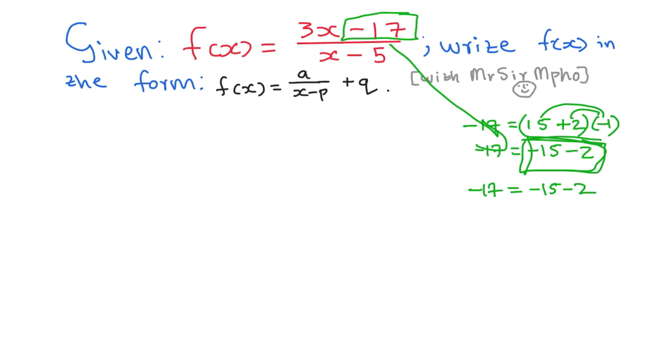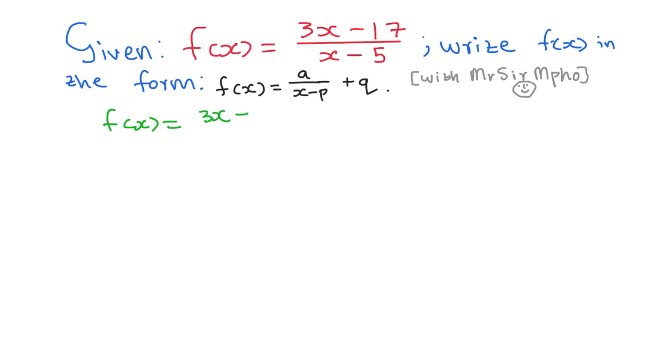So now, we're going to go back straight to answering the question now, which means I'm going to say my f of x is equal to what? 3x minus, remember now, I don't have negative 17, but I have what? Negative 15 minus 2, which means where I see negative 17, I will substitute by negative 15 minus 2, because negative 15 minus 2 is negative 17. And then you're going to say all over x minus 5.